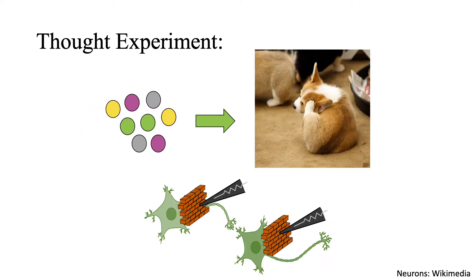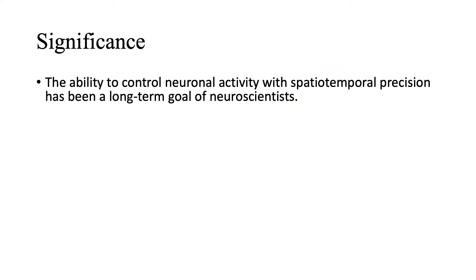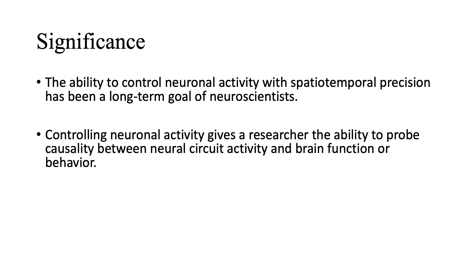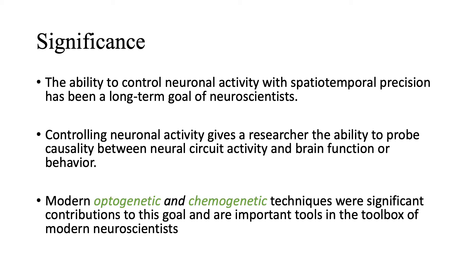In both of these thought experiments, we need precise, versatile tools for manipulating neuronal activity. In fact, the ability to control neuronal activity with spatiotemporal precision has been a long-term goal of neuroscientists, because being able to control the activity of neurons gives researchers the ability to probe causality between neural circuit activity and brain function or behavior. To this end, modern optogenetic and chemogenetic techniques were significant contributions to this goal and are important tools in the toolbox of a modern neuroscientist. So let's talk about what they are and how they work.